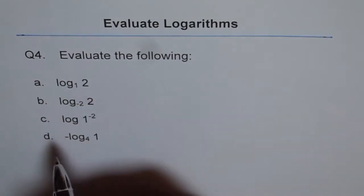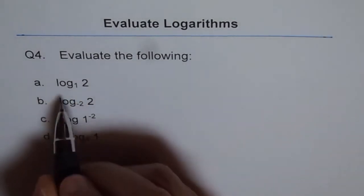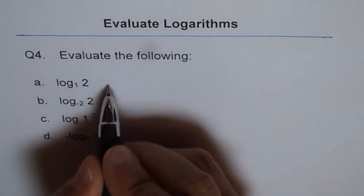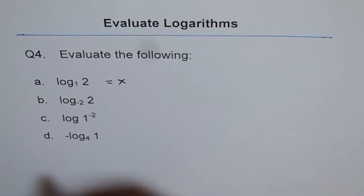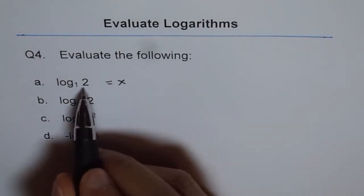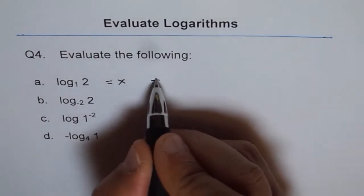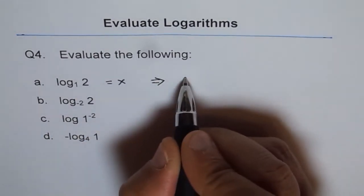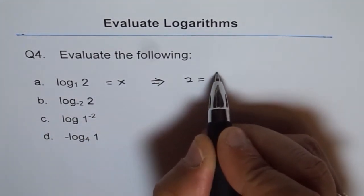And here is the reason. Let's say that log to the base 1 of 2 is equal to x. In that case, if I write it in exponential form, what do I get? This implies that 2 is equal to 1 to the power of x.